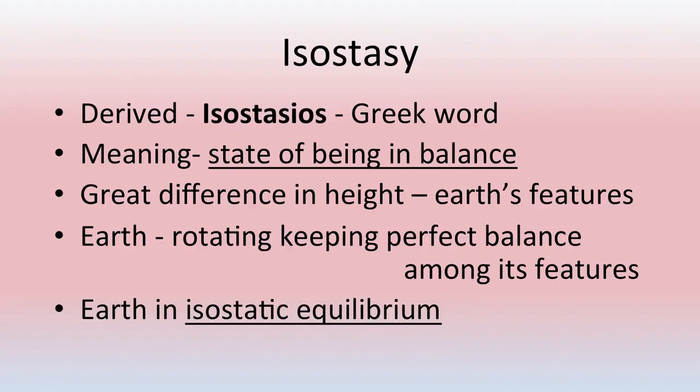What is isostasy? It is derived from the Greek word 'isostesios' and it means state of being in balance. There is great difference in height on the earth surface — mountains are very high, plateaus are lower, and plains are very low. Earth is rotating and keeping perfect balance among all these features of different height, and in this manner earth is in isostatic equilibrium.